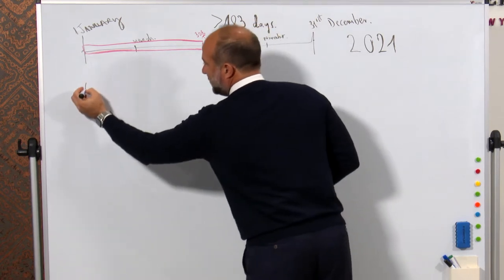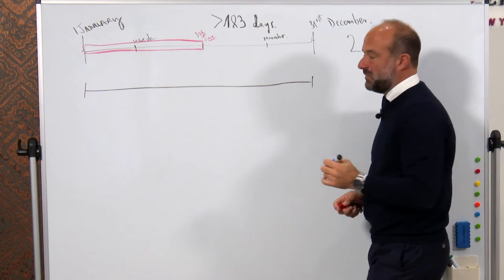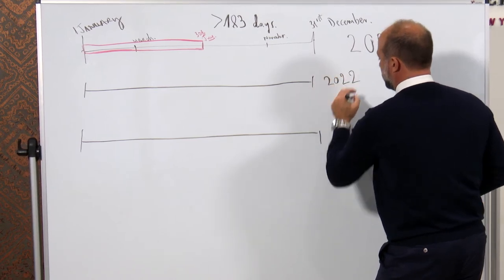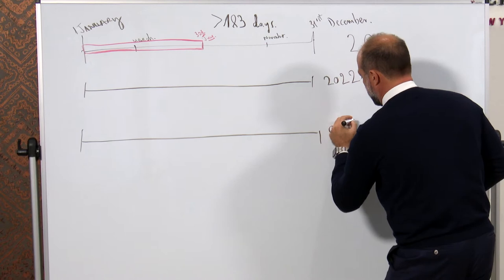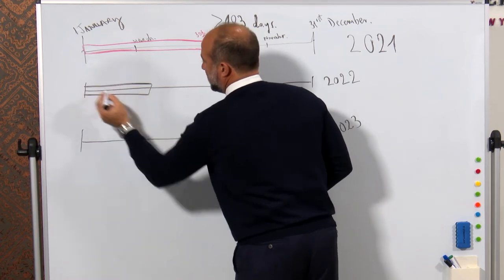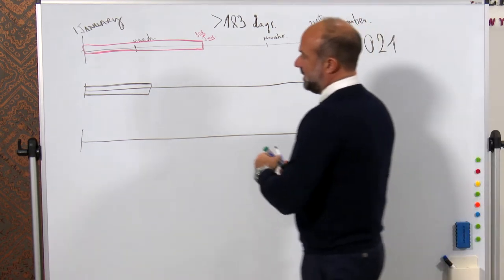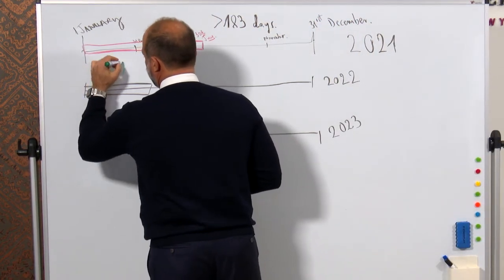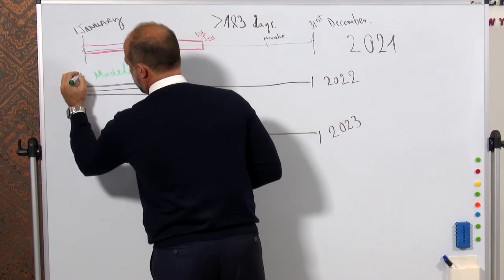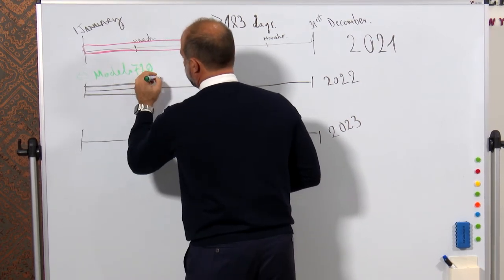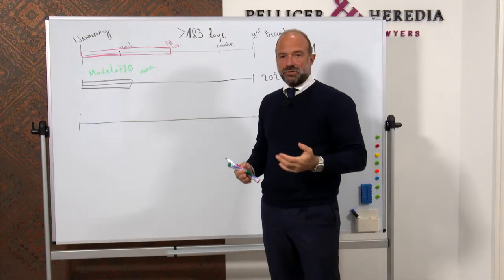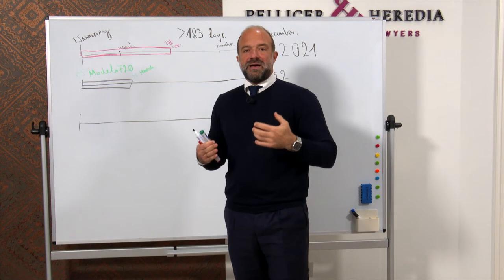If this is the case, what are the obligations in Spain for the following year? In the following year, the first thing that needs to be done is Modelo 720, from the 1st of January to the 31st of March. Modelo 720 is an informative declaration — it is information you give to the tax office if you have assets abroad.